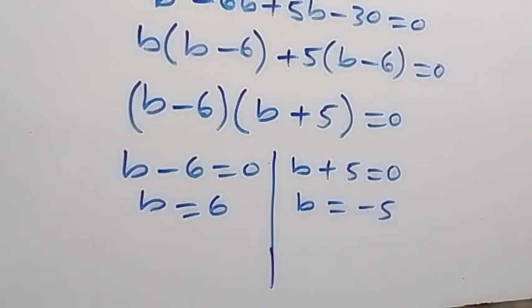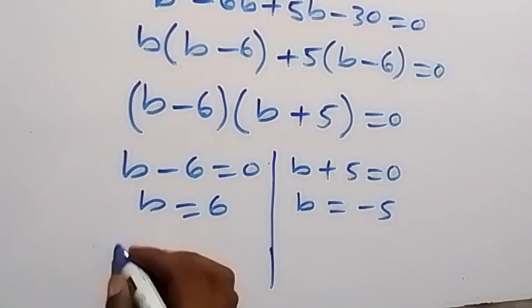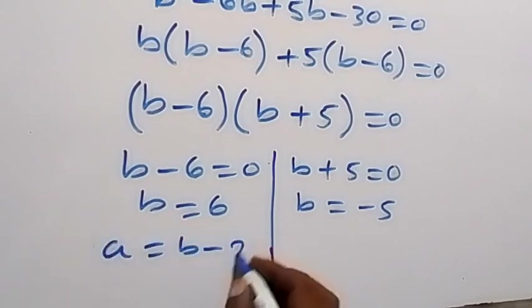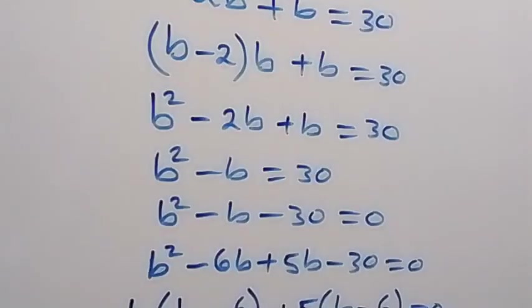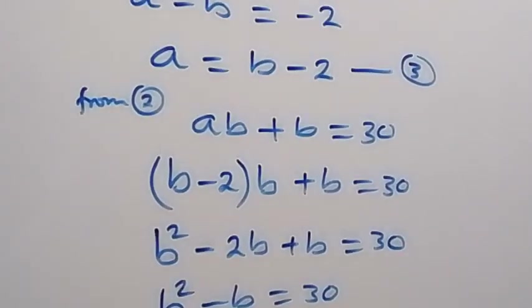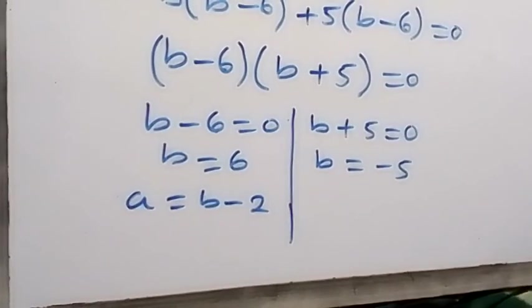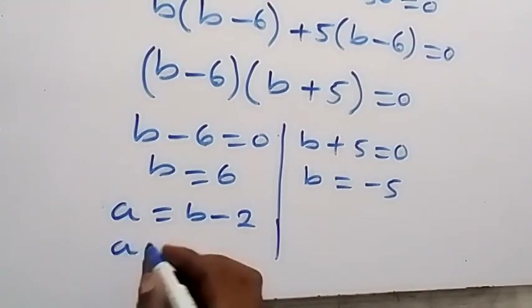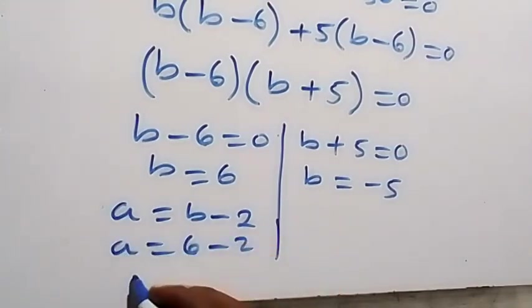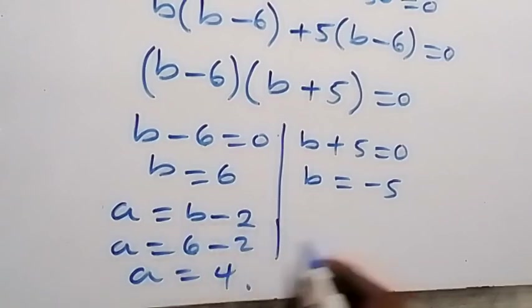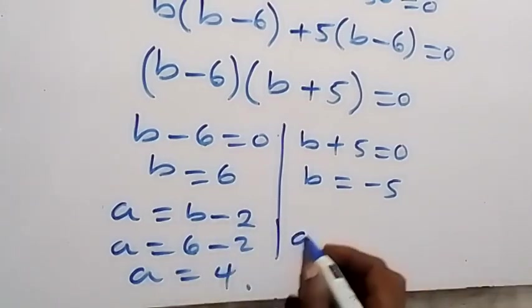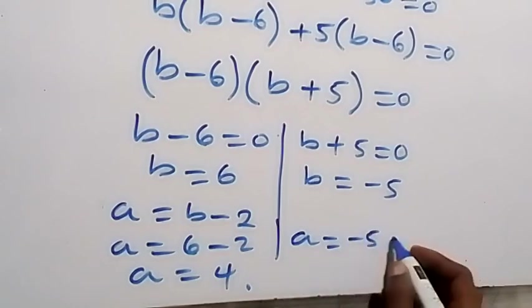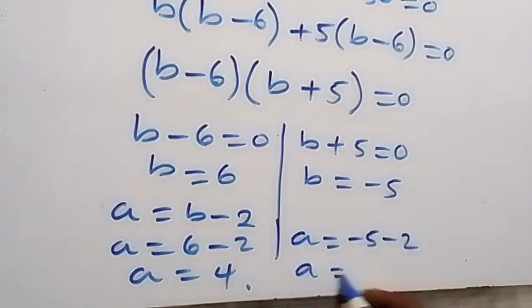Then, to get A, we can use equation 3 that we have. A equals to B minus 2. So, when we use that here to find the value of A, this will become B is 6. So, we have A equals to 6 minus 2. And here, A equals to 4. Then, on this side as well, using this A equals to B minus 2, we have A will now be equals to minus 5 minus 2. So, A here will be minus 7.